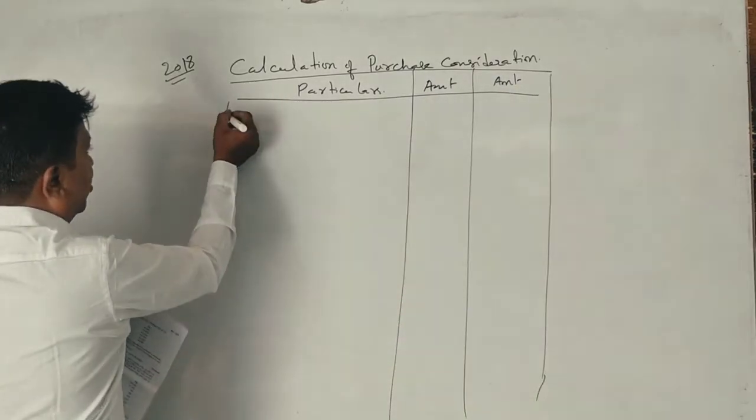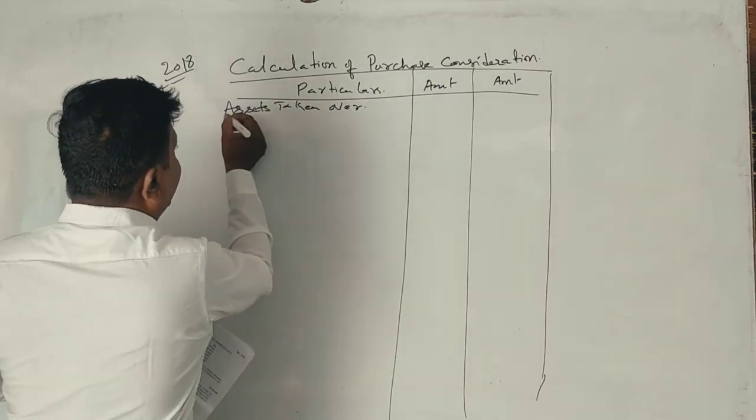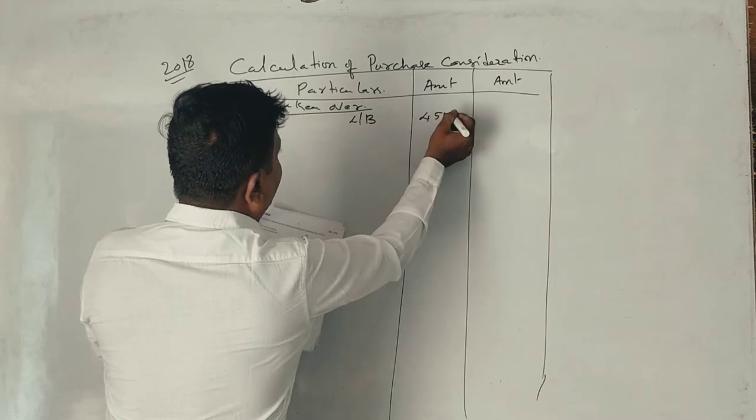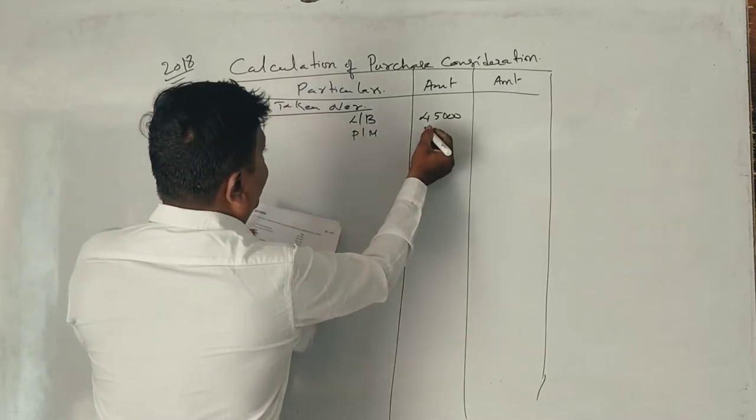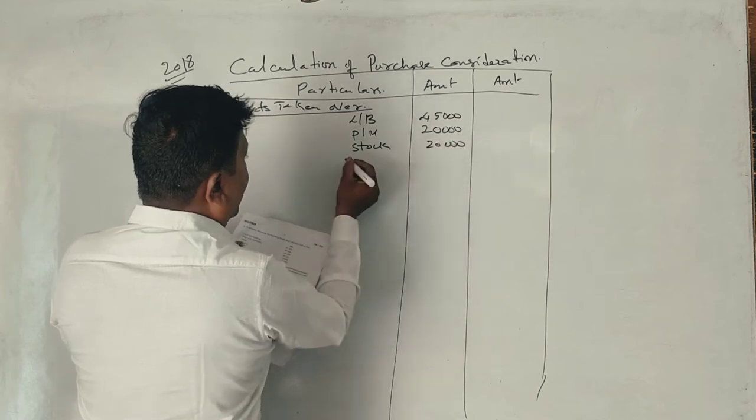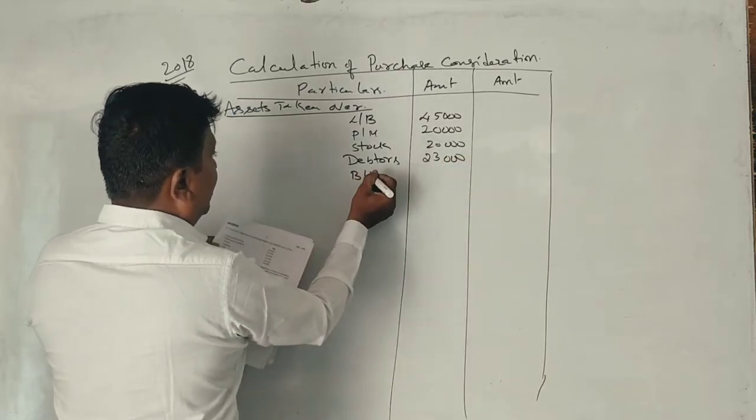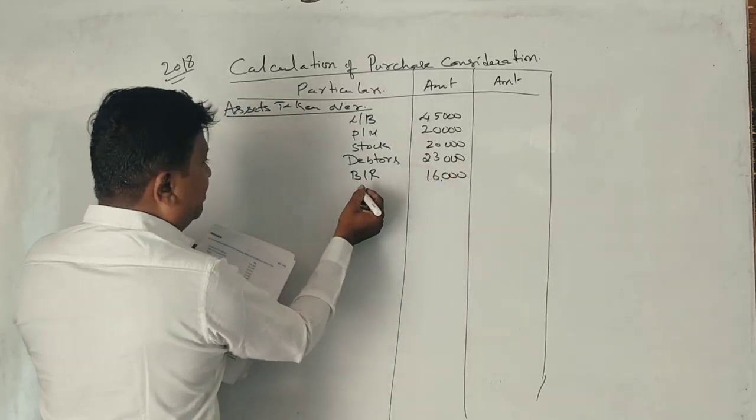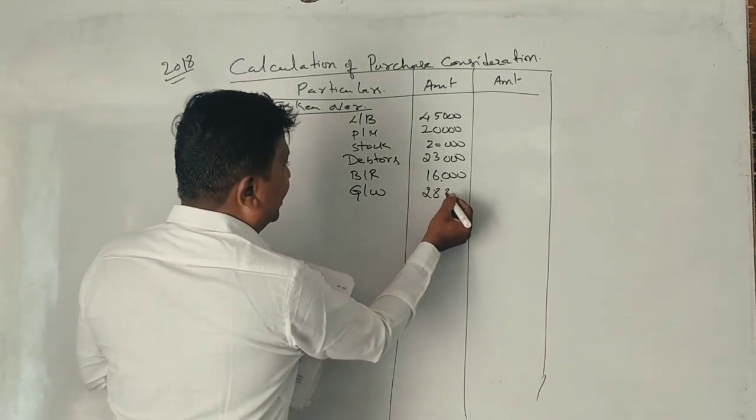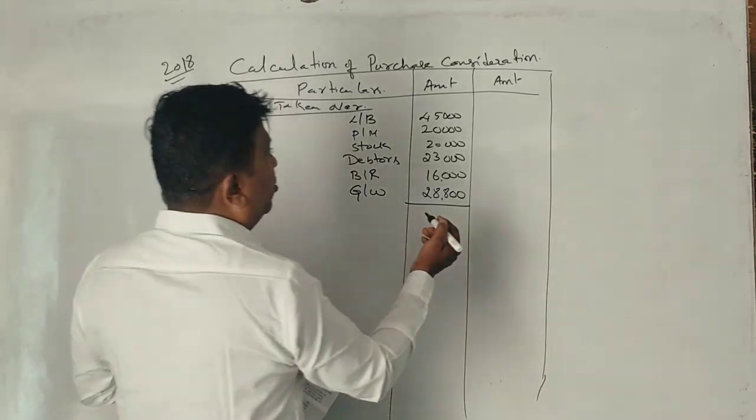First, what are the assets taken over? Land and building 45,000. Plant and machinery 20,000. Stock 20,000. Debtors 23,000. Bills receivable 16,000. Goodwill 28,800. Calculate the total assets.